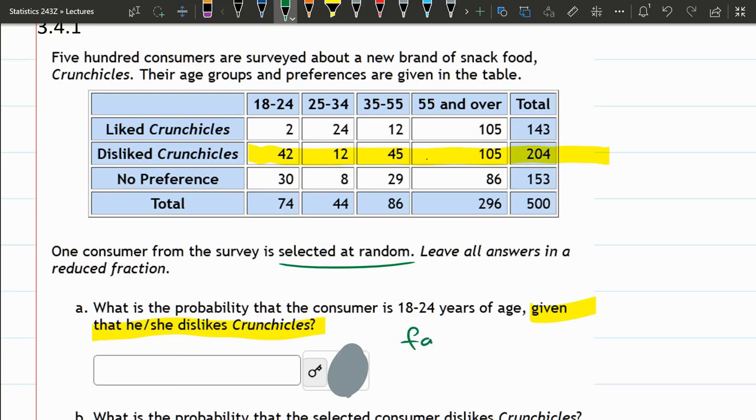We want to think about favorable divided by total. Let's do total. Total is sitting right there, 204 is total. Now again, that's only the disliked Crunchies total. It's not the total number surveyed overall, which would have been 500. It's only the ones that dislike Crunchies. So how about favorable here? 18 to 24 is what we're looking for. There's 42. So the answer to this will be 42 over 204.